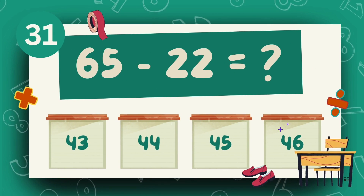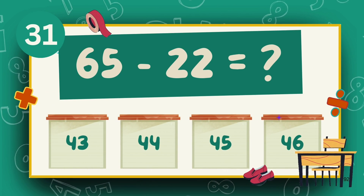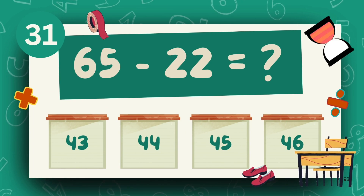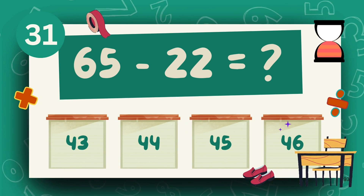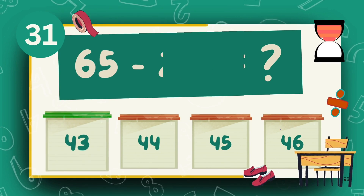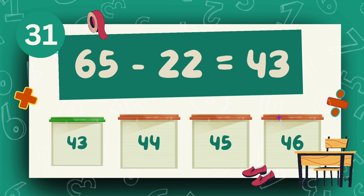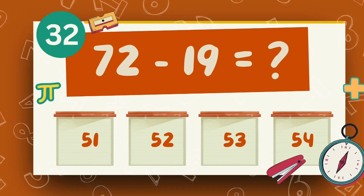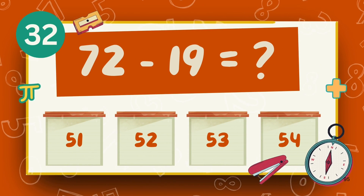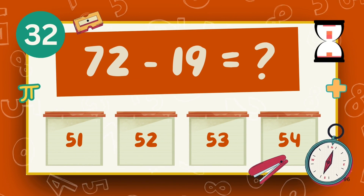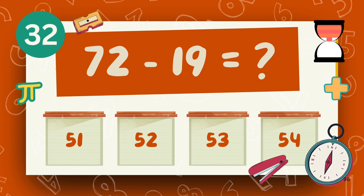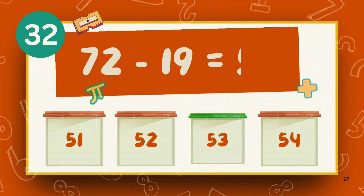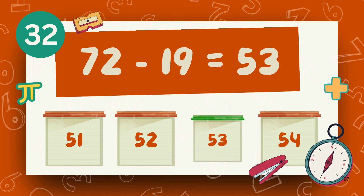What is 65 minus 22? The answer is 62. What is 72 minus 19? The answer is 63.